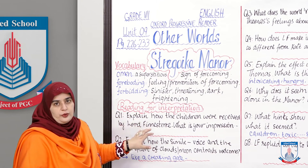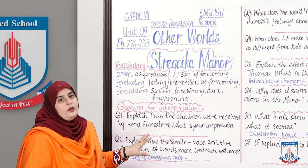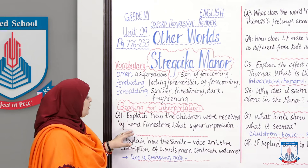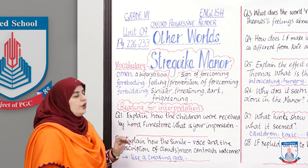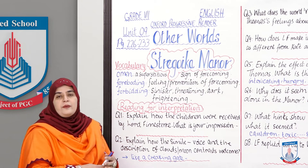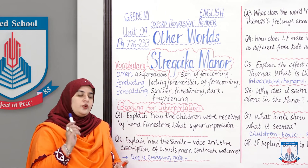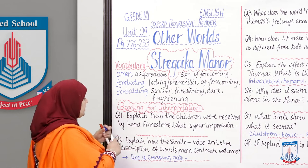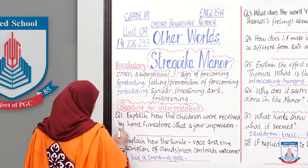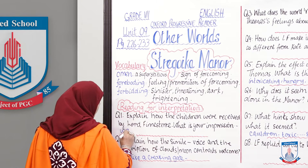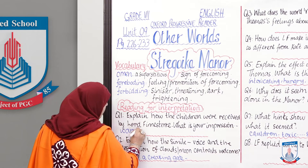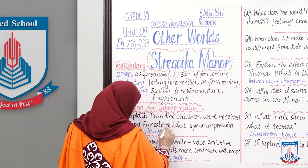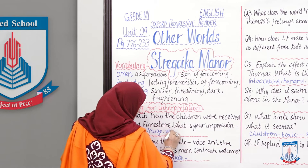Now I will do the interpretation together with you and explain the comprehension. Question: Explain how the children were received by Lord Fenister. What is your impression of the Lord? In the first paragraph, the children knocked the door and Lord Fenister opened the gate to welcome them. He greeted and received them with warmth and a huge smile, and gave them a very warm welcome.